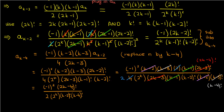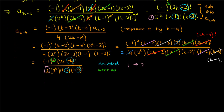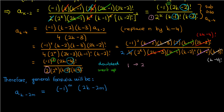You can keep going to find a_{k-6}, a_{k-8}, and so on, and at this point a pattern emerges. From a_{k-2} to a_{k-4}, the number subtracted in the factorials doubles, the power on (−1) increases by 1, and a new factorial factor appears in the denominator. This pattern yields the general formula: a_{k-2m} equals (−1)^m times (2k−2m)!, divided by m! times 2^k times (k−m)! times (k−2m)!.